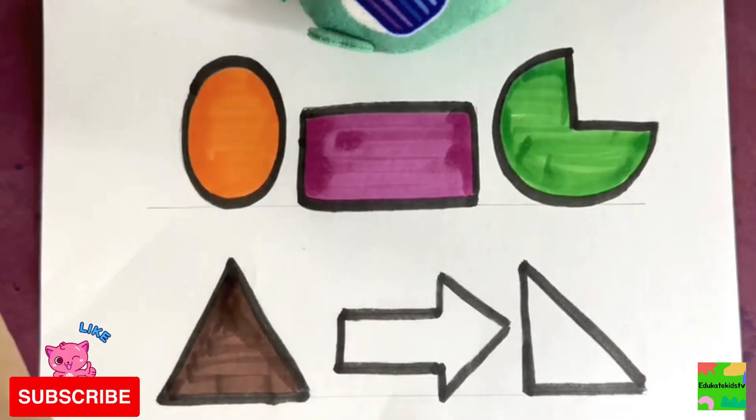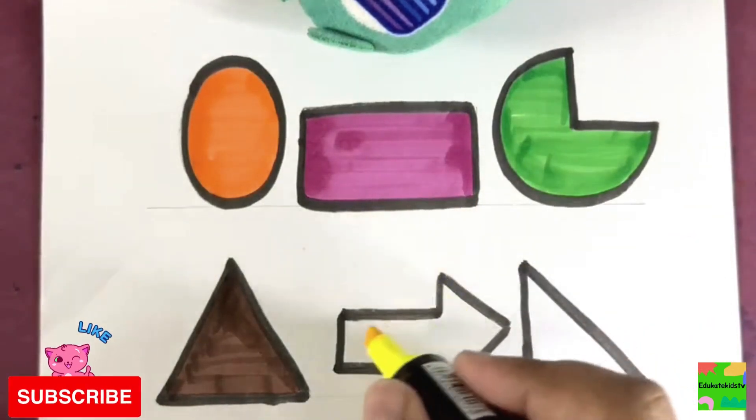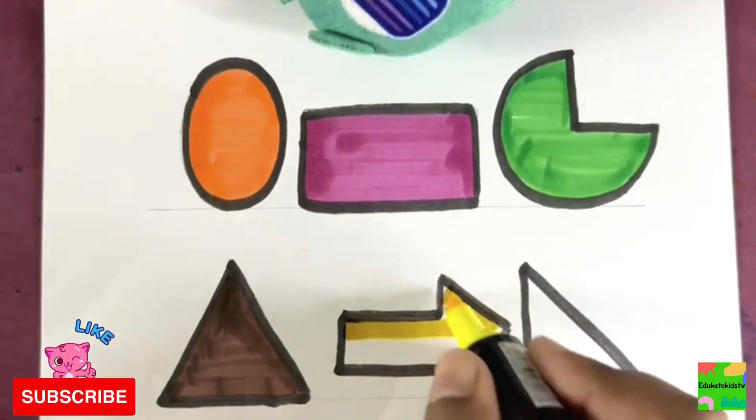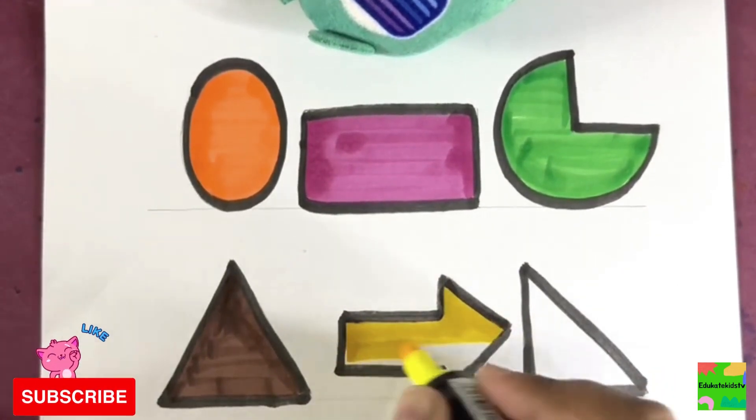Next I will color this arrow yellow. Yellow color, yellow color arrow. Yippee!